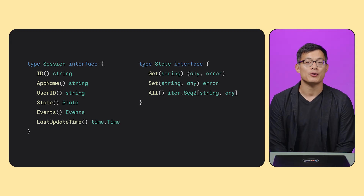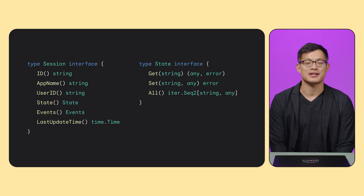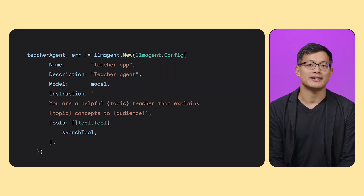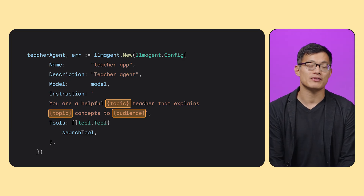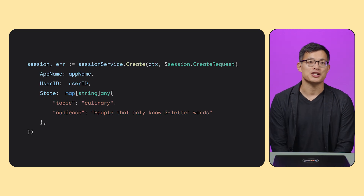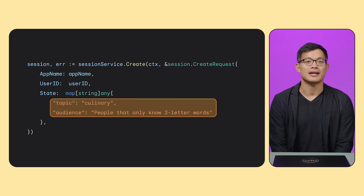The state is your agent's temporary scratchpad — a place to store data specific to this particular conversation. Let's see how to specify the initial state by revisiting our science teacher example. We improve the agent by making the instruction generic, such that the teacher's topic can change depending on a state variable, using curly-braced placeholders accepting different subjects and audiences. When we initialize the session, we can specify the initial topic and audience. For knowledge that needs to survive beyond a single conversation, you need long-term memory. ADK addresses this with the memory service, which we'll cover in a future video.